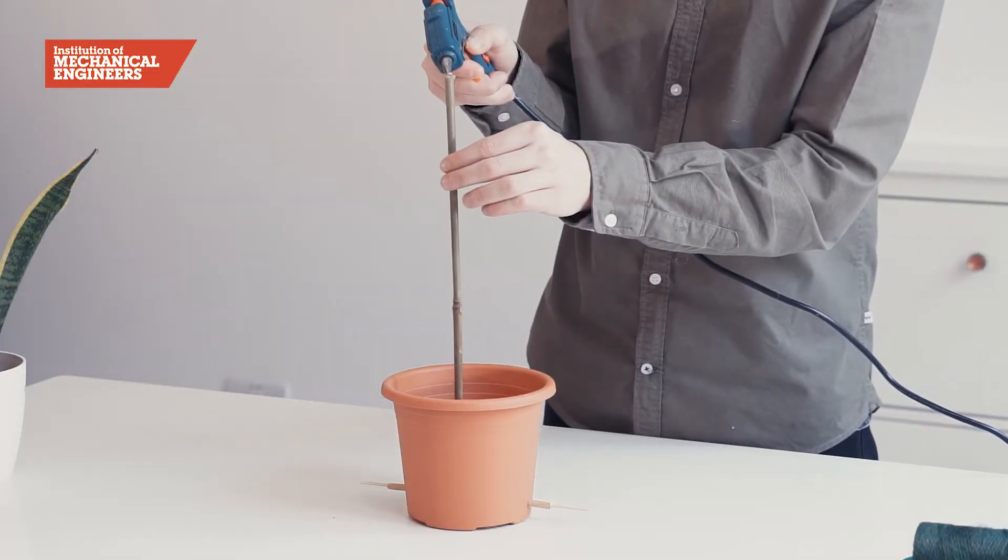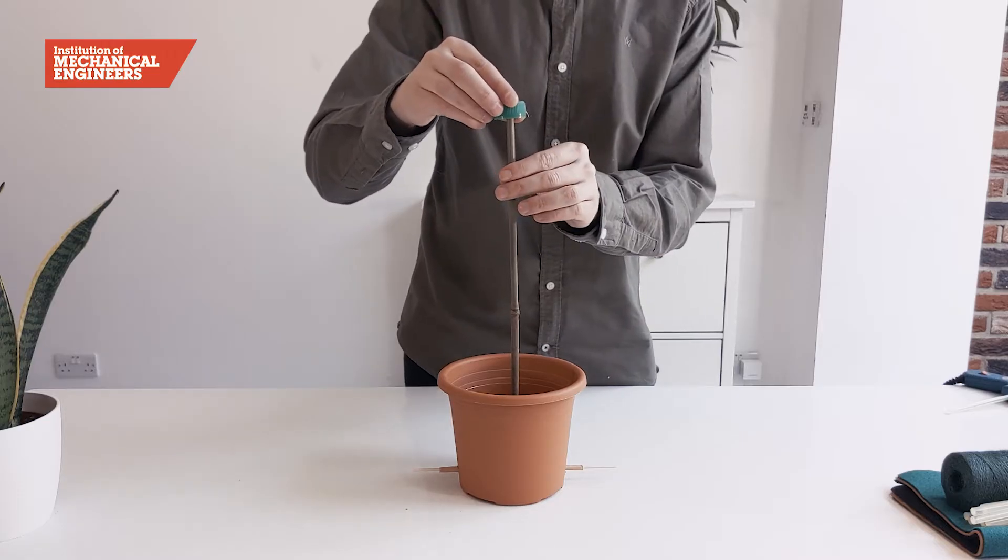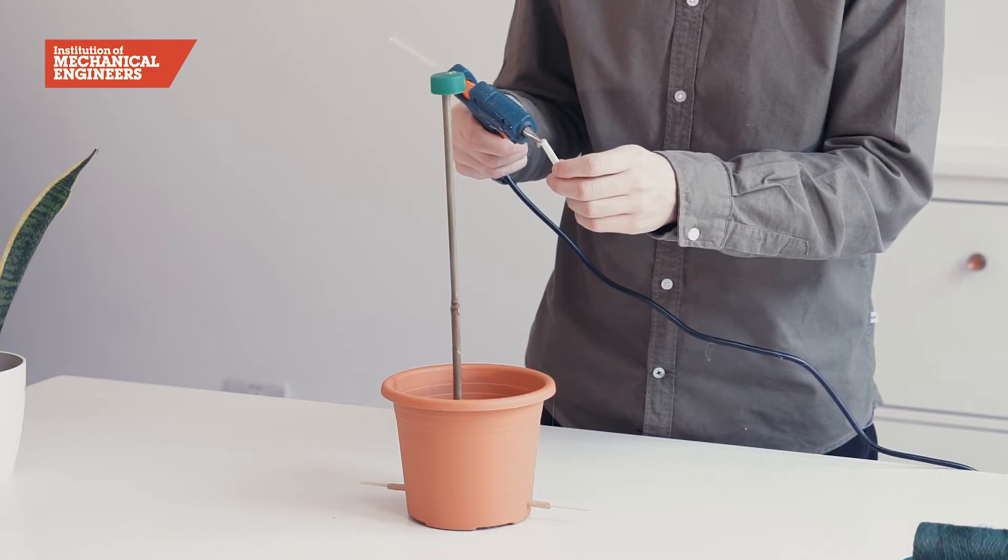Next, glue the plastic bottle top to the top of the stalk and using coloured straws, make a stamen and stigma for the flower.